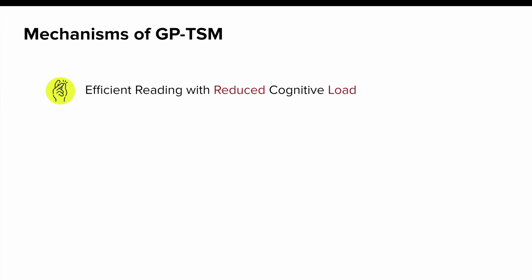Second, participants' gaze paths largely align with the visual cues of GPTSM, suggesting a more informed skimming behavior where they make smarter choices on what to skip when skimming.